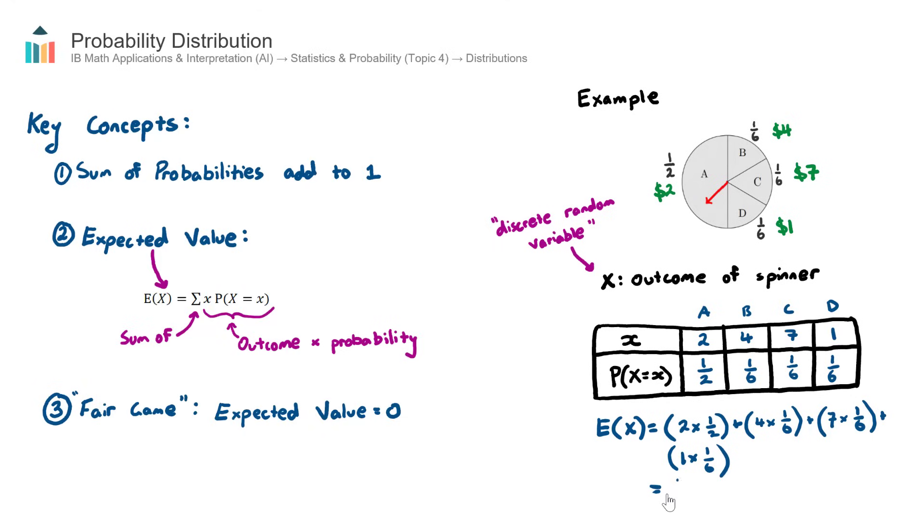So there you go. If I play this game over and over again, a thousand times, or many times, my average prize would be three. Interestingly, there is no result in just one spin that will result in an outcome of three, but the average result over many spins per spin would be three. So we call this our expected value.